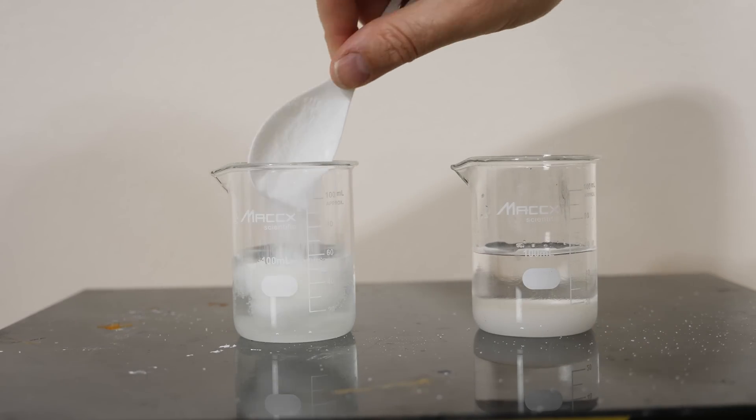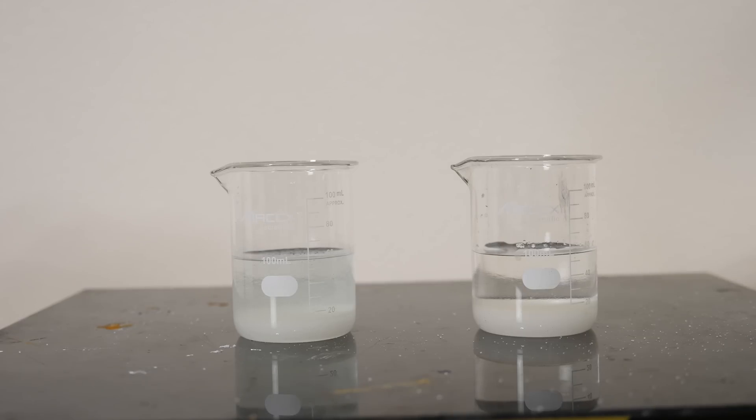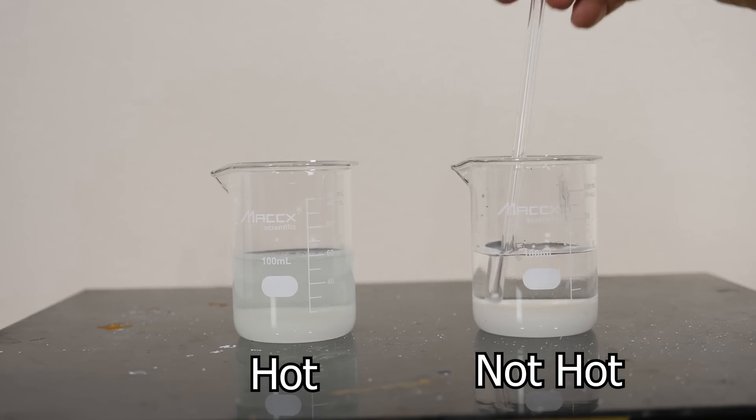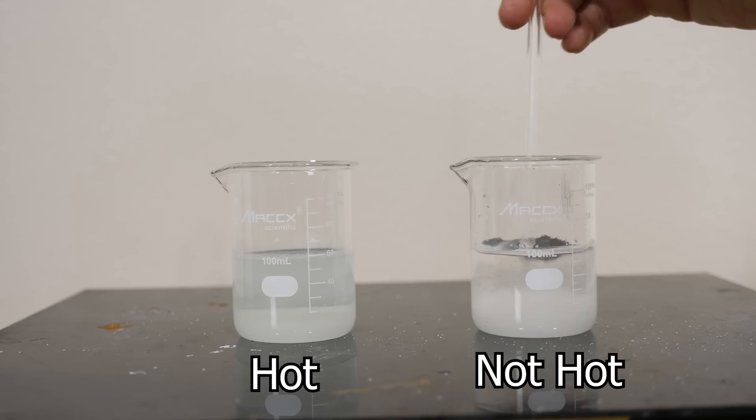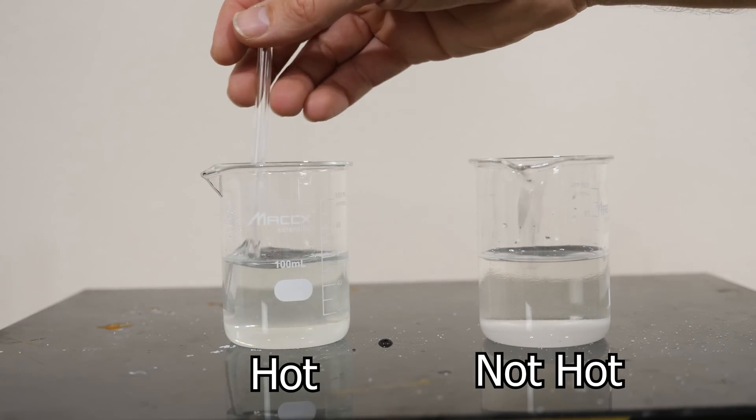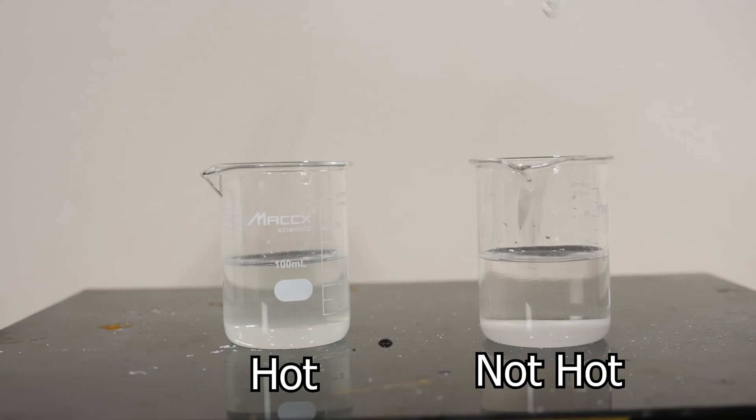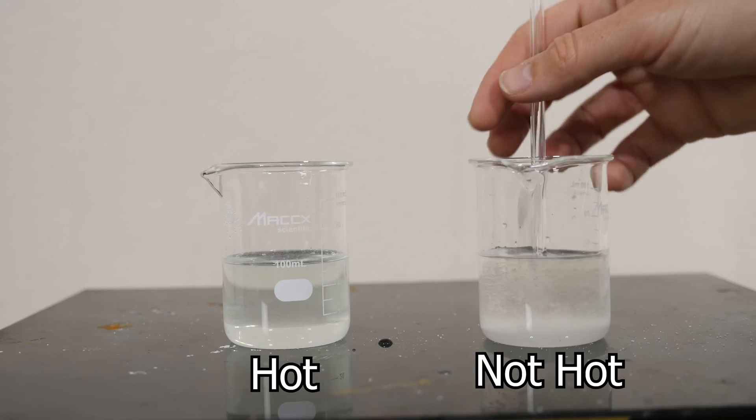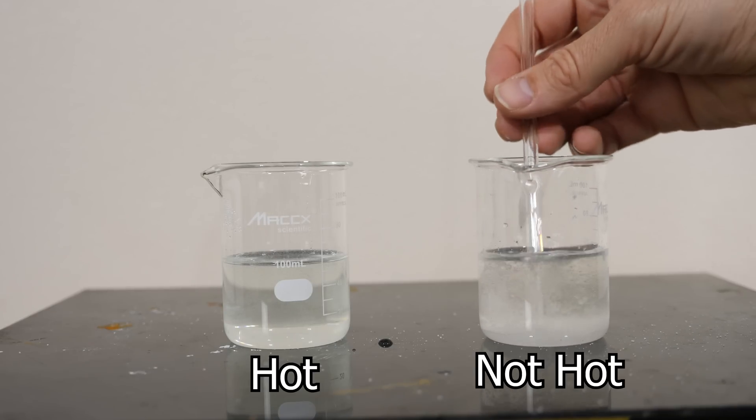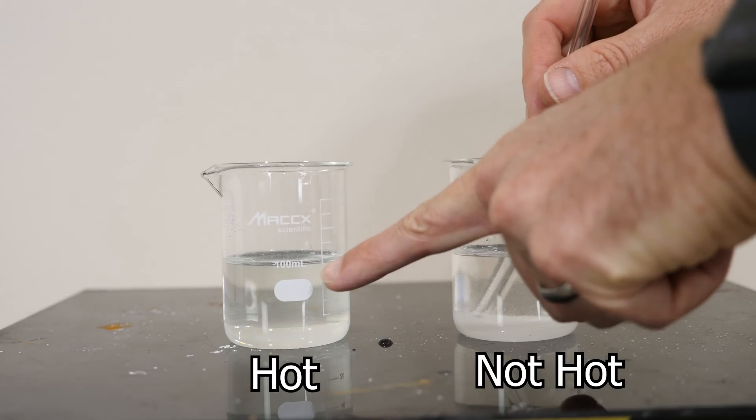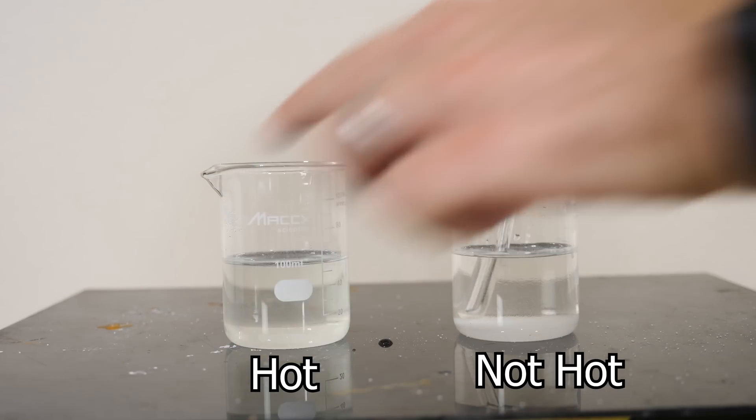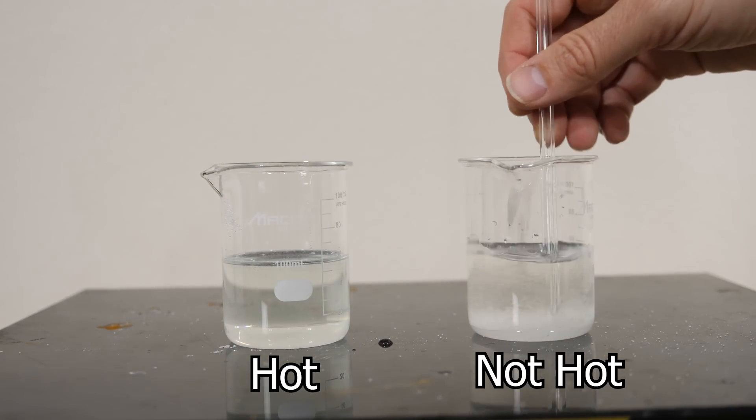If I want to dissolve the sugar faster or dissolve more of it in water, then I should heat it up. This one's at room temperature and this one's almost boiling. So the hot water completely dissolved the sugar. It's a clear solution now, but the cold water one has a ton of sugar on the bottom still. So not only did the hot water dissolve the sugar faster, but it could also hold more dissolved sugar than the cold water.